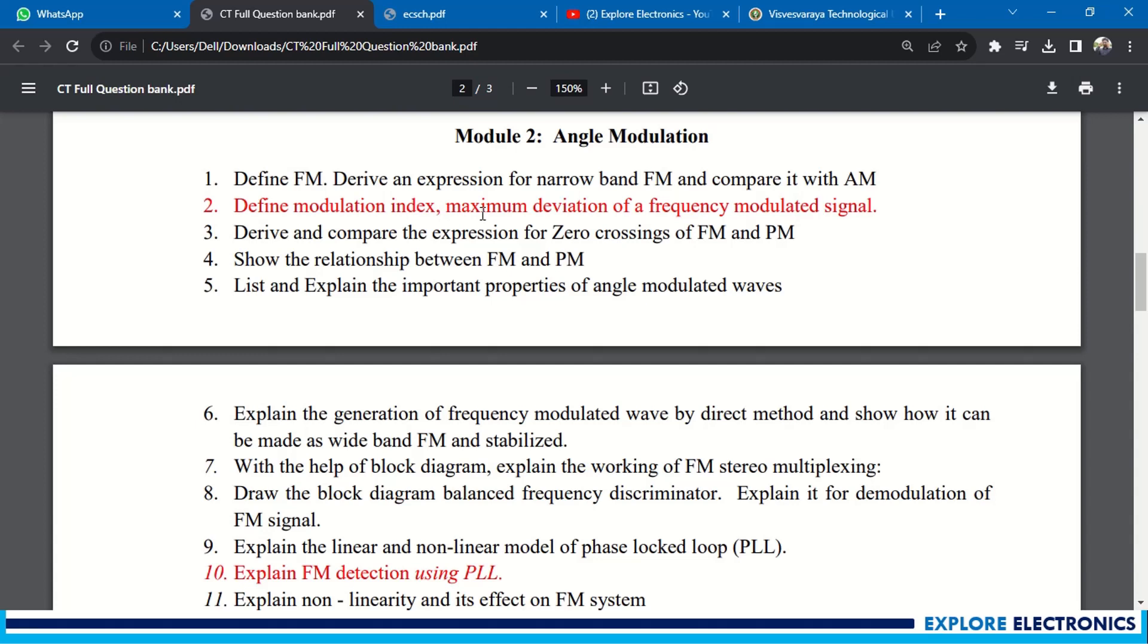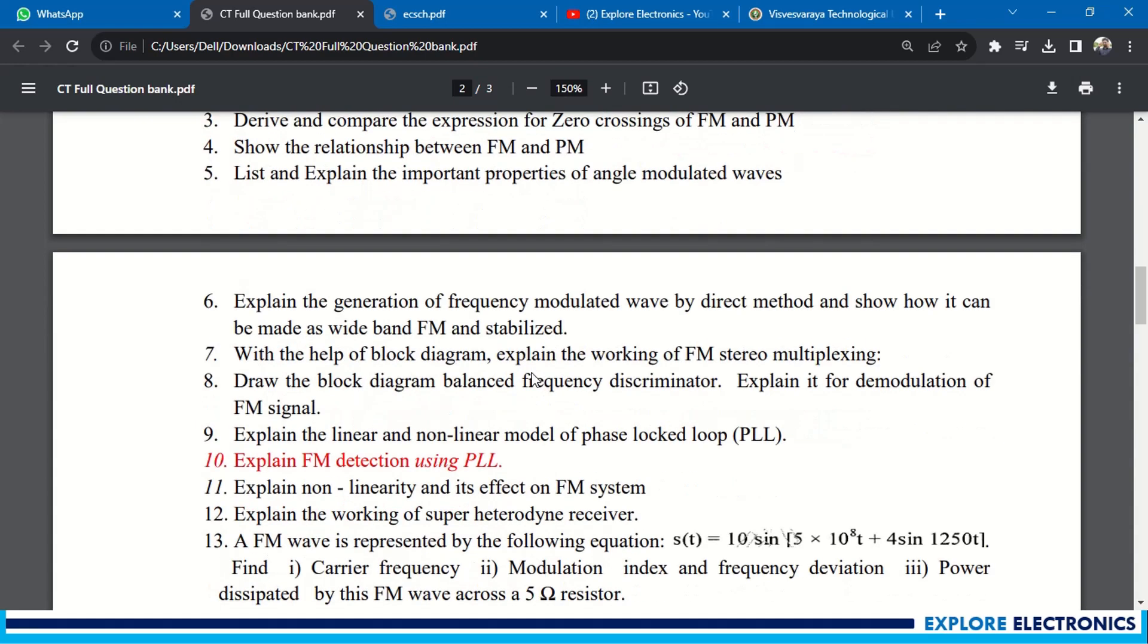Define modulation index, maximum deviation of a frequency modulated signal. Derive and compare the expressions for zero crossing of FM and PM. Show the relationship between FM and PM. List and explain the important properties of angle modulated waves.